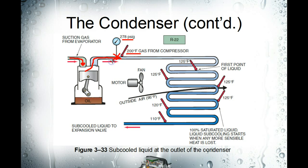Right at the outlet of the compressor you're going to have 278 psig and 200 degree Fahrenheit gas coming from the compressor. If you look at your pressure temperature chart, that doesn't match up — because the pressure temperature chart only deals with refrigerant that's in the saturated state, where it's going to change from vapor to liquid.